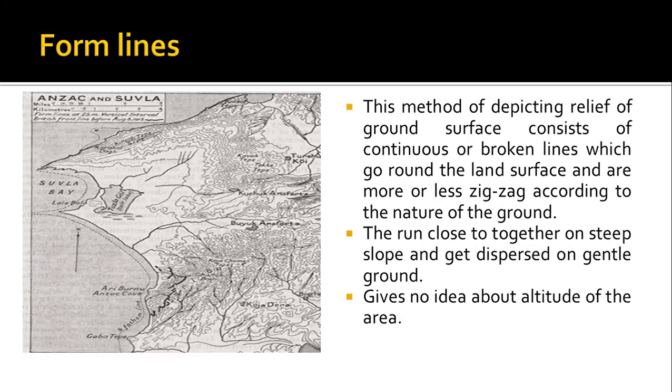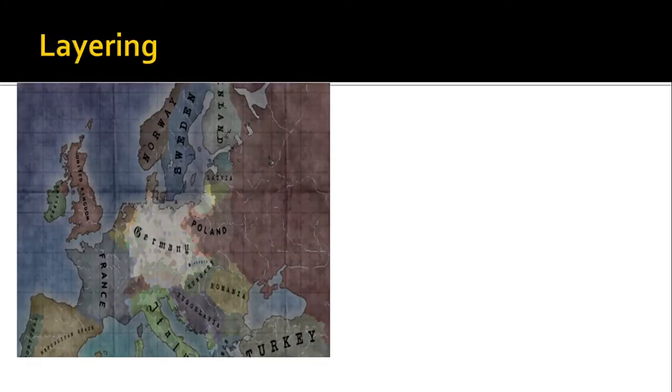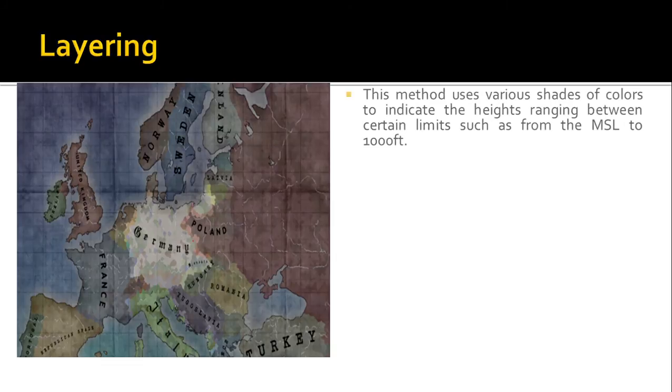And the next method is layering, in which the use of color indicates the range of height from mean sea level. So this you might have seen in your schooling when you are doing your geography classes, drawing colors in your map. The same way they are using the colors to show the height difference.